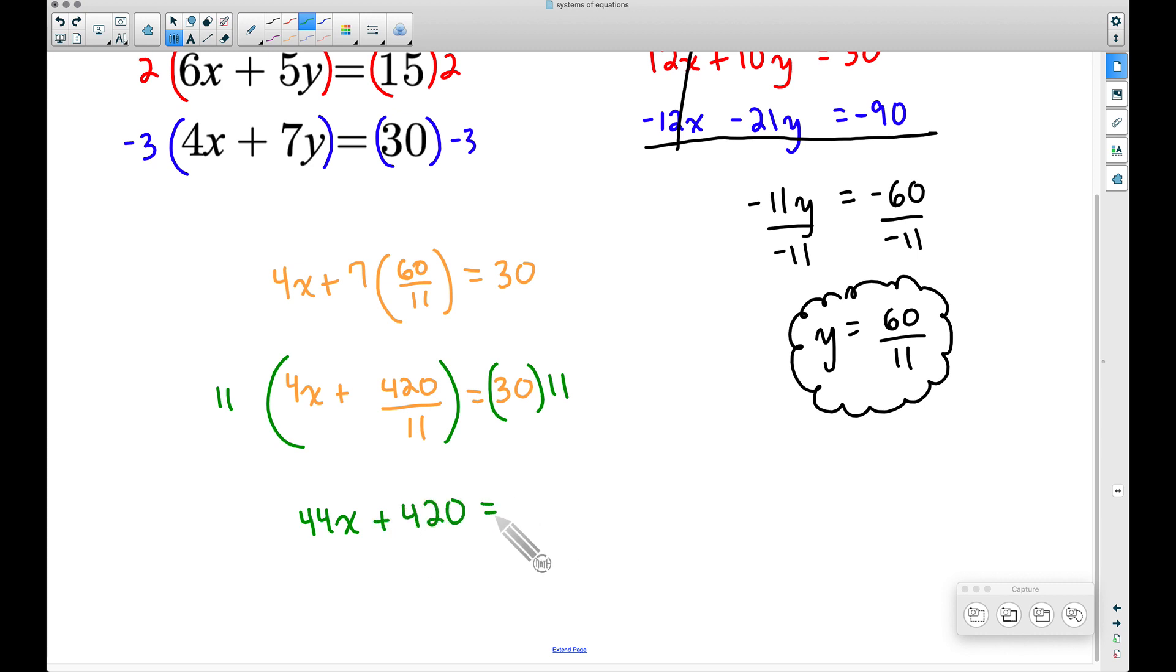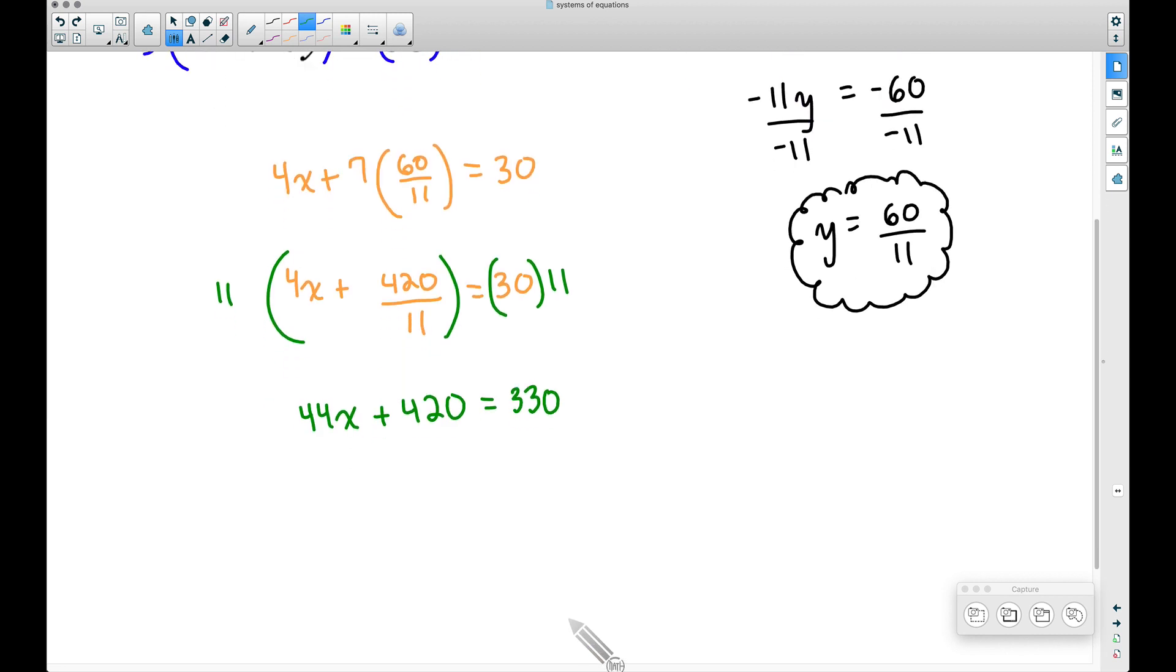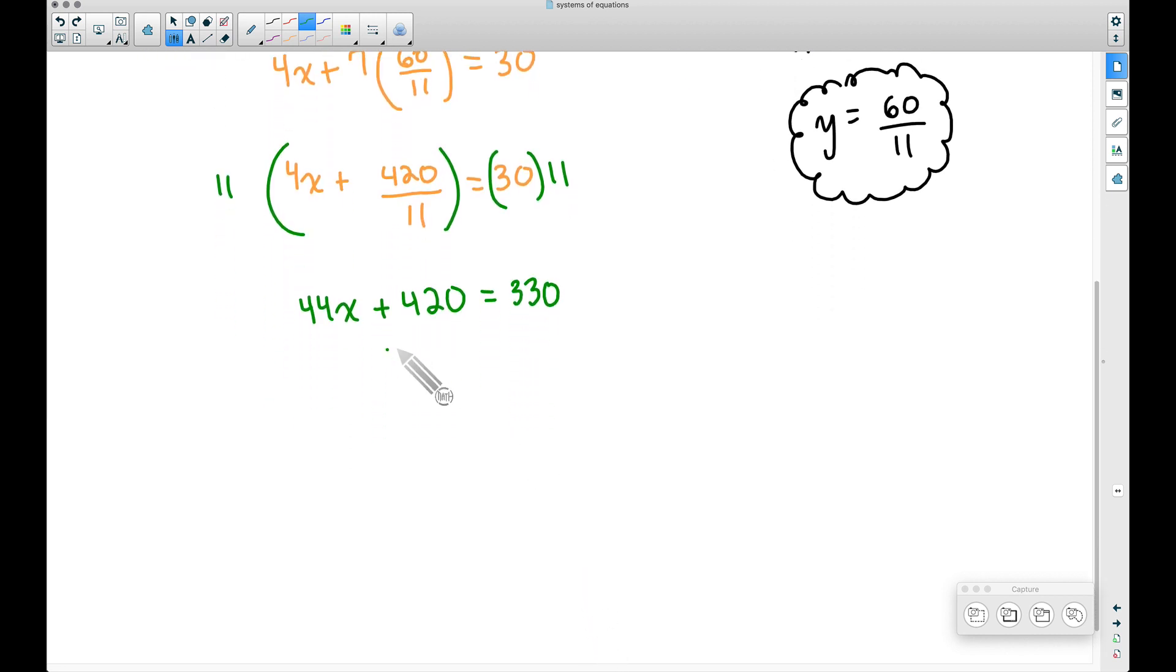And this is equal to now 30 times 11. Well, 3 times 11 is 33, so 30 times 11 is going to be 330. Now we do have some big numbers here, but it's not going to work out too bad since they're all even and we're going to probably be able to simplify these pretty nicely. So 420 minus 420, we're trying to get x by itself, and then we're going to subtract 420 over here. Therefore we have 44x is equal to 330 minus 420. That's going to be a negative number because we're taking away more than what we had. This is going to be negative 90.